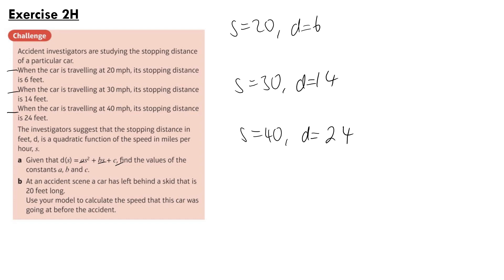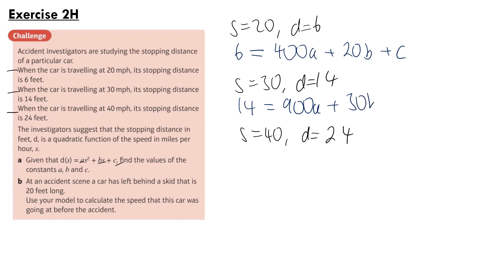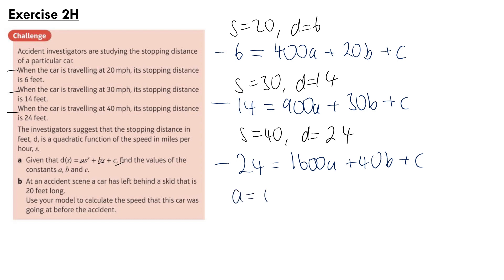Substituting the first data point (s=20, d=6): 6 = 400a + 20b + c. For the second (s=30, d=14): 14 = 900a + 30b + c. For the third (s=40, d=24): 24 = 1600a + 40b + c. Putting these three simultaneous equations into the calculator, we get a = 0.01, b = 0.3, and c = -4.